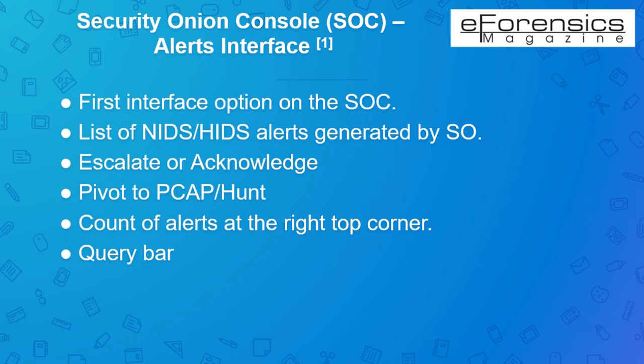In this section, we are going to look into the new interface of Security Onion called Alerts. The first option available on the Security Onion Console is the Alerts interface, which consists of NIDS and HIDS alerts generated from Security Onion. This Alerts interface helps you quickly drill down into alert details. You can pivot to PCAP or Hunt interface. If you find some alerts interesting or uncertain, they can be escalated and viewed using The Hive option available on SOC. Once you have verified an alert and confirmed, it can be acknowledged.